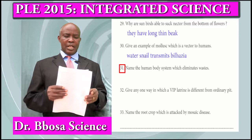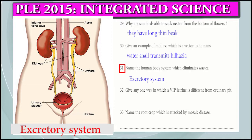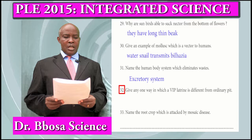Question 31: Name the human body system which eliminates waste. That is the excretory system, consisting of the kidney, urinary bladder, and ureter.